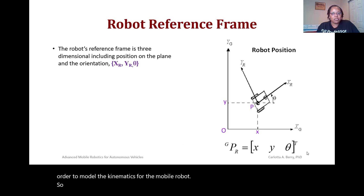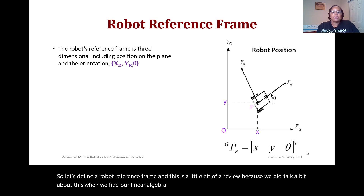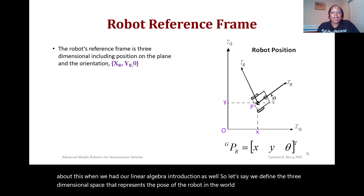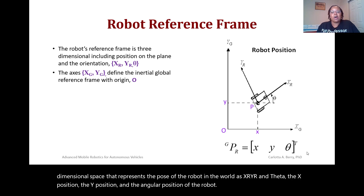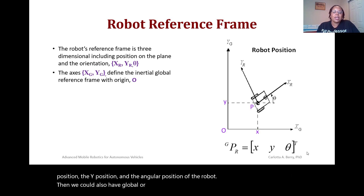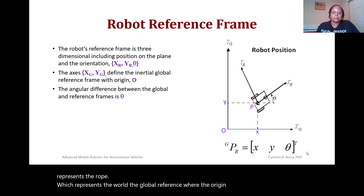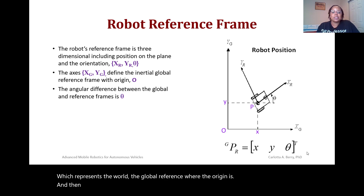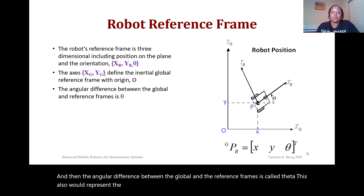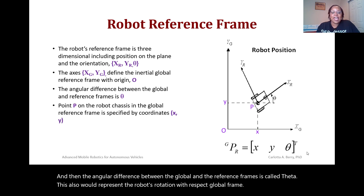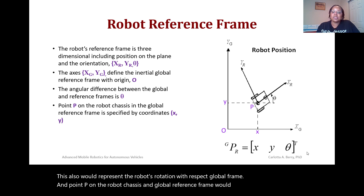Let's define a robot reference frame. We define the three-dimensional space representing the pose of the robot in the world as xR, yR, and theta — the x position, the y position, and the angular position. The global or inertial reference frame is defined as xG and yG, representing the world with origin O. The angular difference between the global and local reference frames is called theta, which also represents the robot's rotation with respect to the global frame. Point P on the robot chassis in the global reference frame is the robot's position x and y.